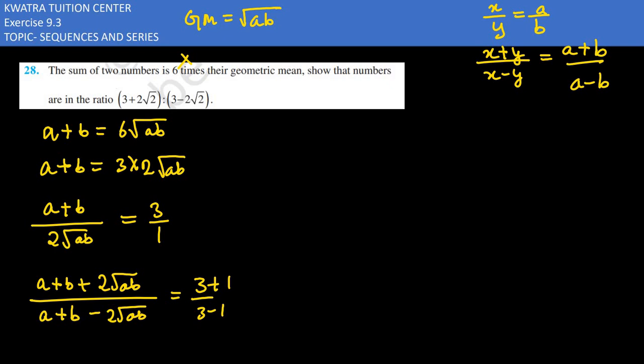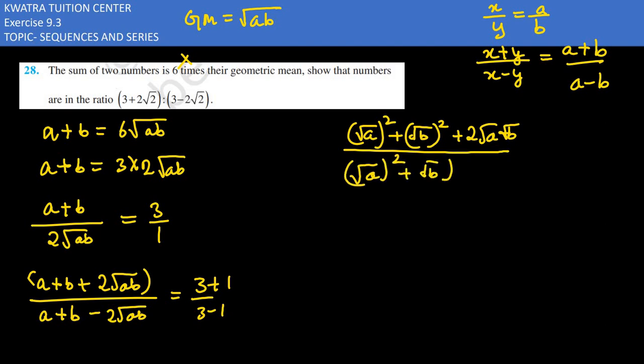How do we convert it? We can do (√a)² + (√b)² + 2√a√b, which is (√a + √b)².